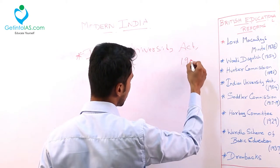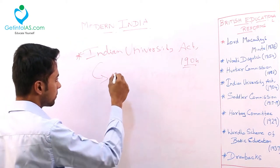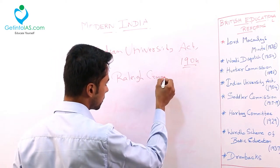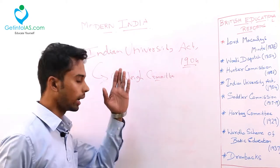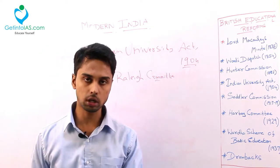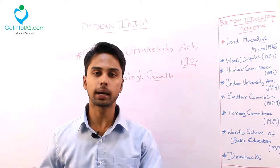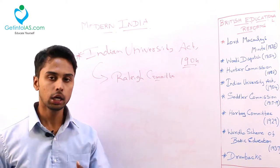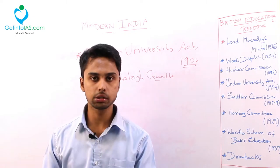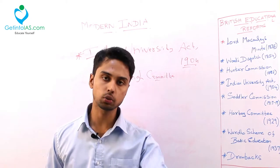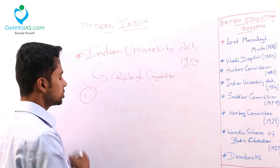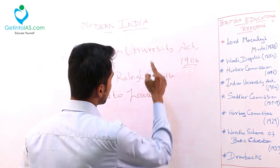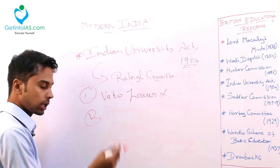Next came the Indian University Act of 1904. This Indian University Act was brought by a committee called the Raleigh Committee and was introduced by Lord Curzon. At that time, students were participating in mass movements and political parties held in colleges. So Lord Curzon came with the University Act, the main aim of which was to regulate the universities and prohibit students from political activities. The universities were very much controlled, and the veto power of the universities was abolished.